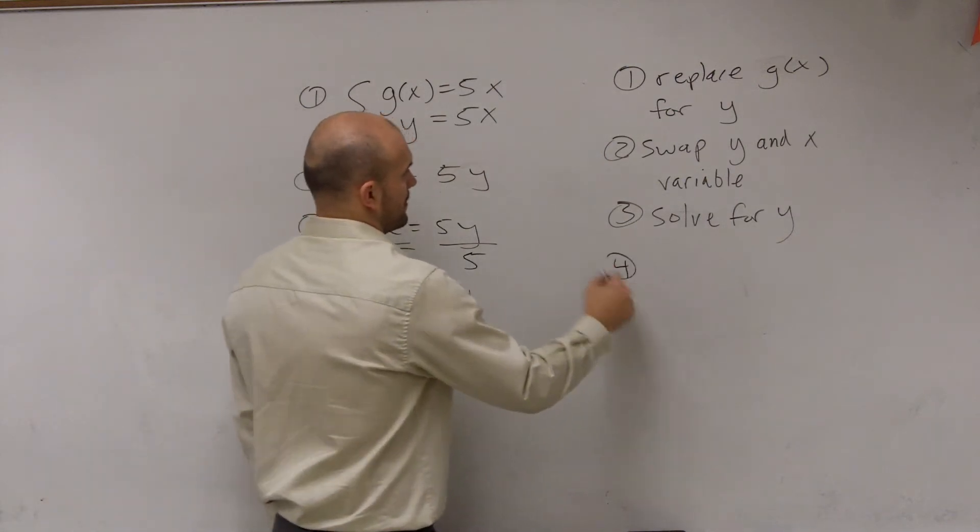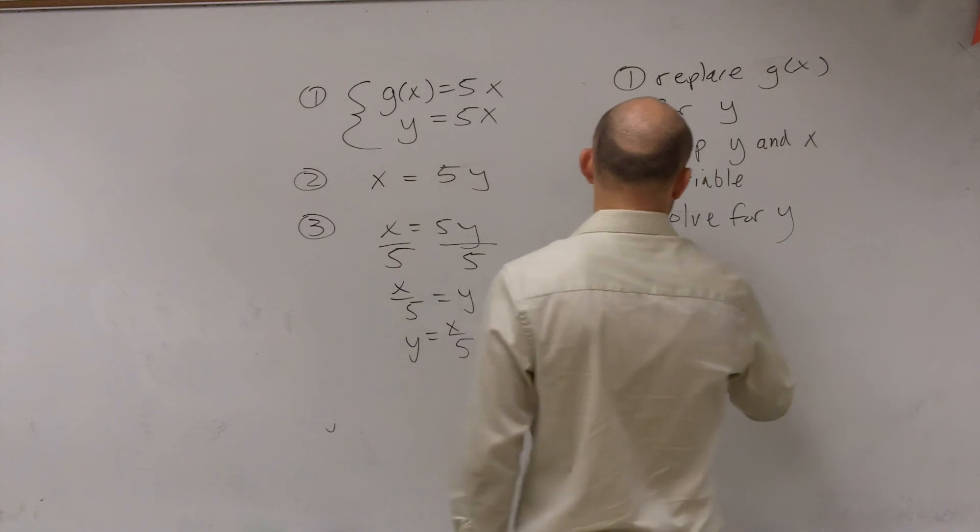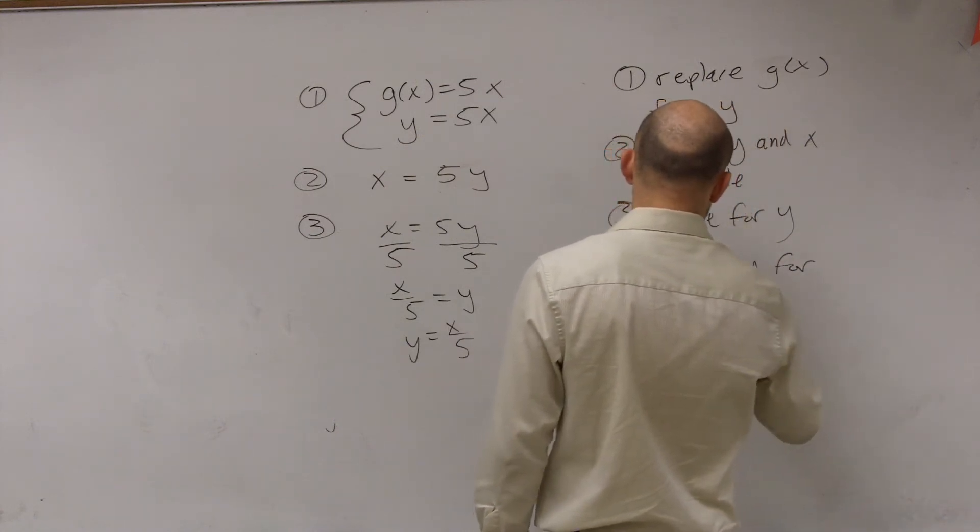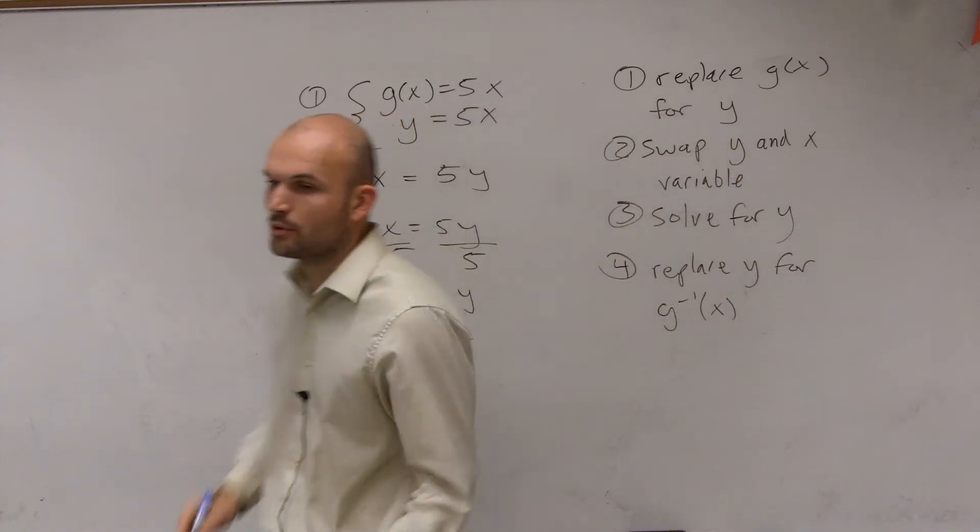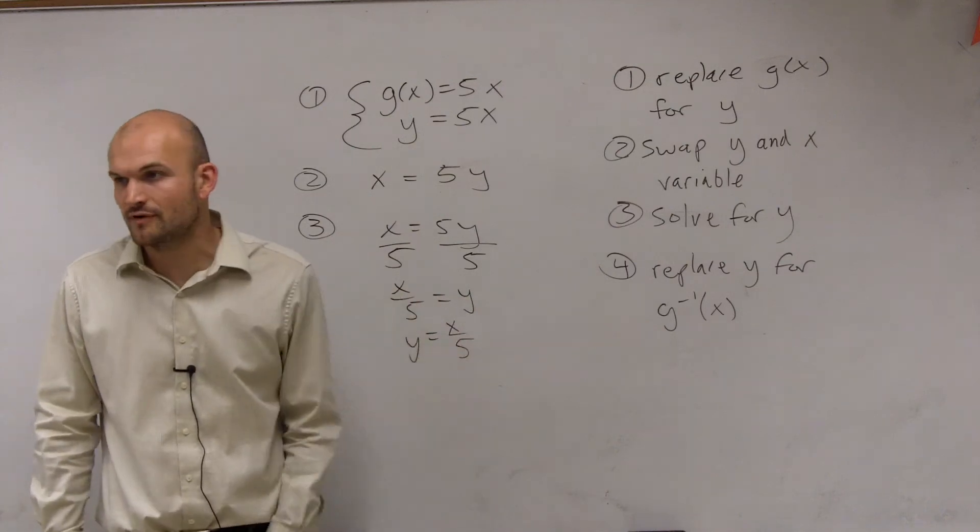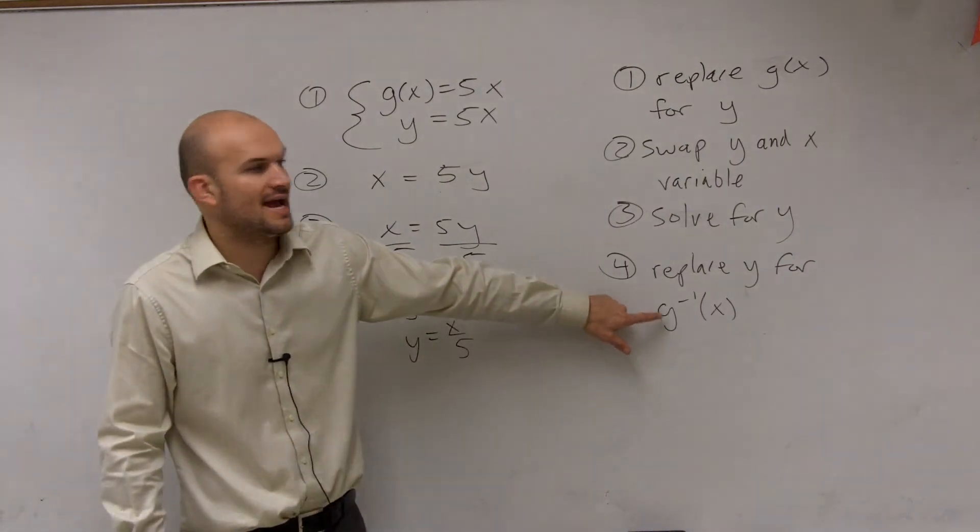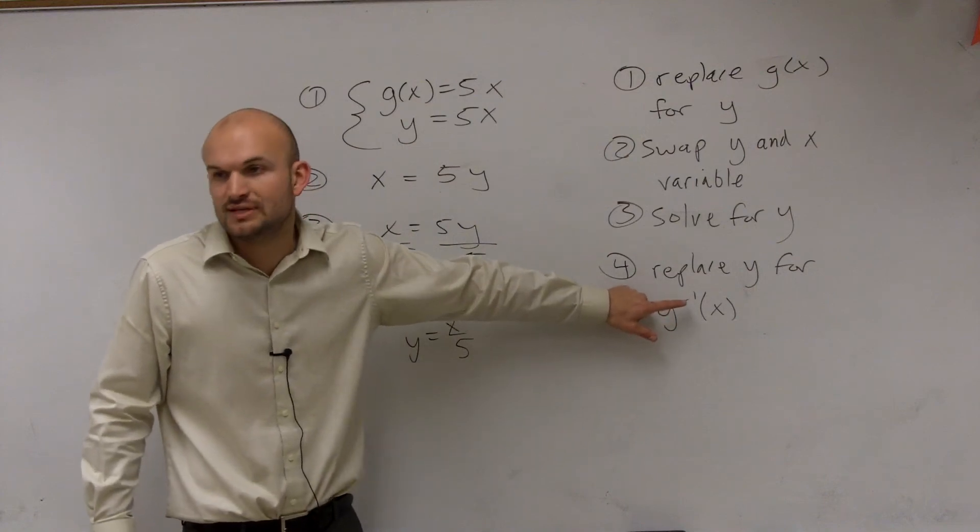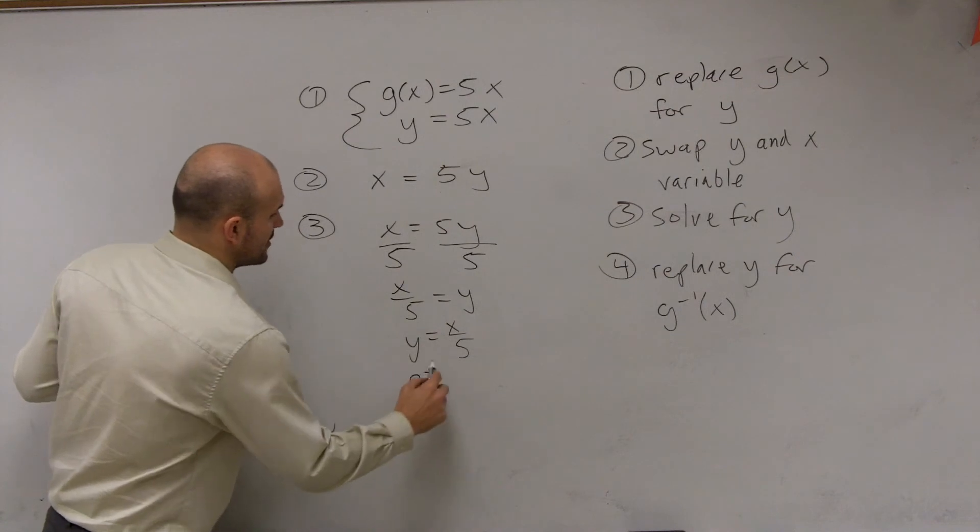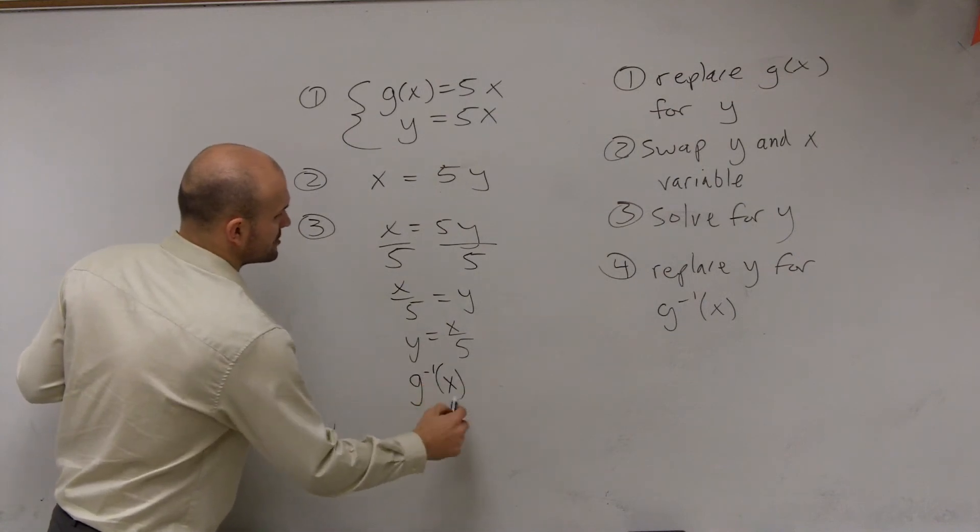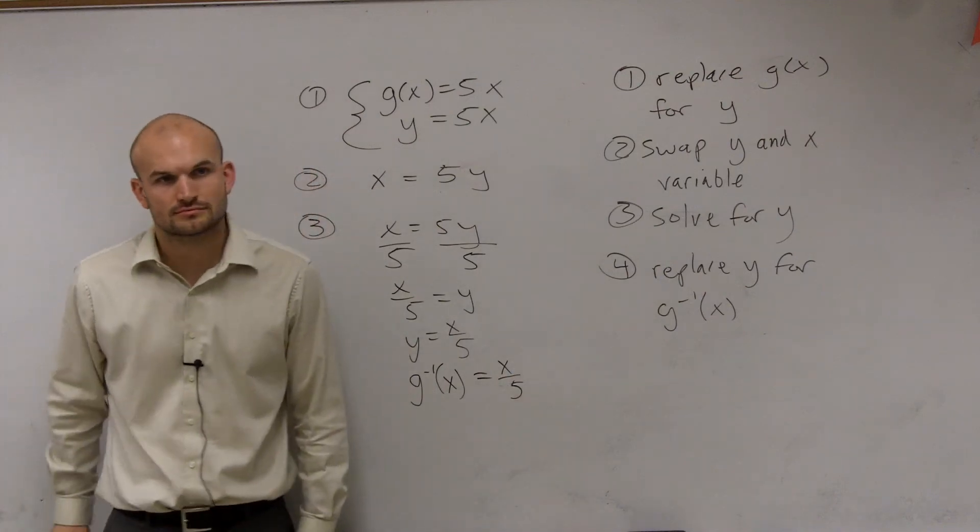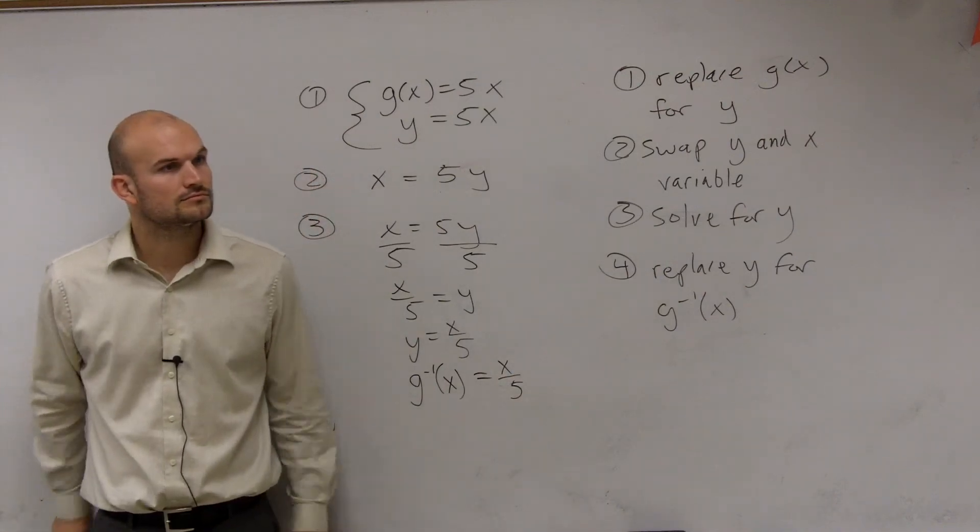Step number four: we replace y for g inverse of x. Remember, what we're trying to do, this whole process, this step-by-step process, is to find the inverse of a function. The inverse of a function is denoted as your function name raised to the negative first power times x. So therefore, we just say g inverse of x equals x over 5. That's it.